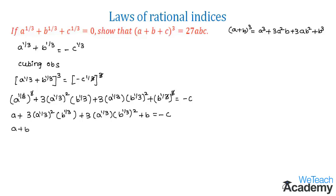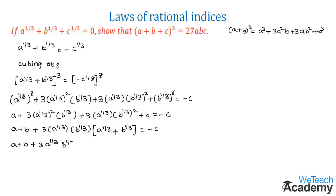This simplifies to a plus 3 into a power 1 by 3 into b power 1 by 3 into a power 1 by 3 into b power 1 by 3 plus b equals minus c. Now we replace a power 1 by 3 plus b power 1 by 3 with minus c power 1 by 3. Transferring minus c to the left hand side, we get a plus b plus c minus 3 into a power 1 by 3 into b power 1 by 3 into c power 1 by 3 is equal to 0.